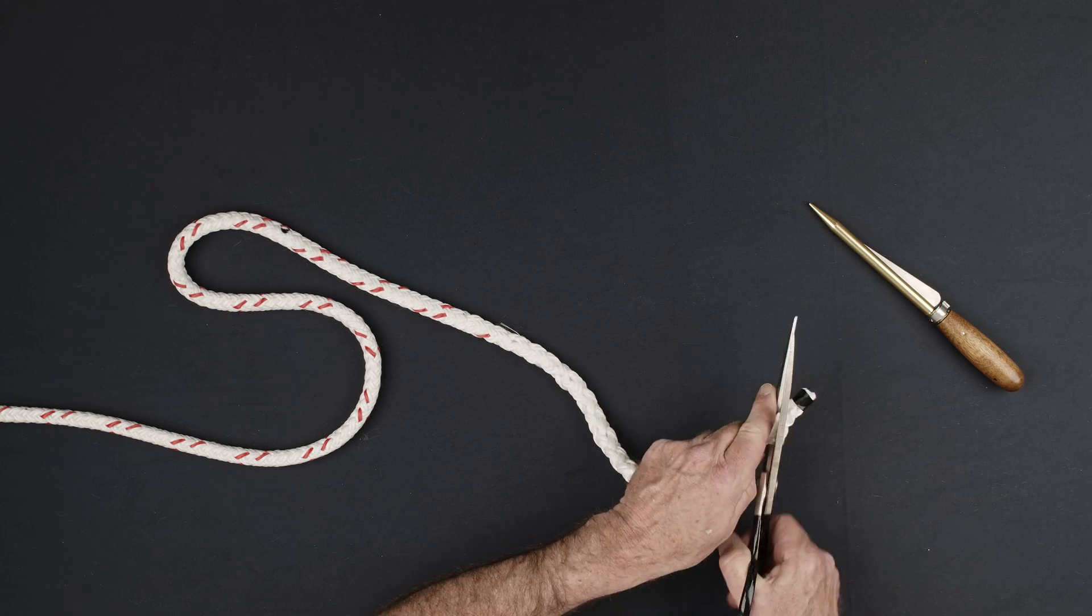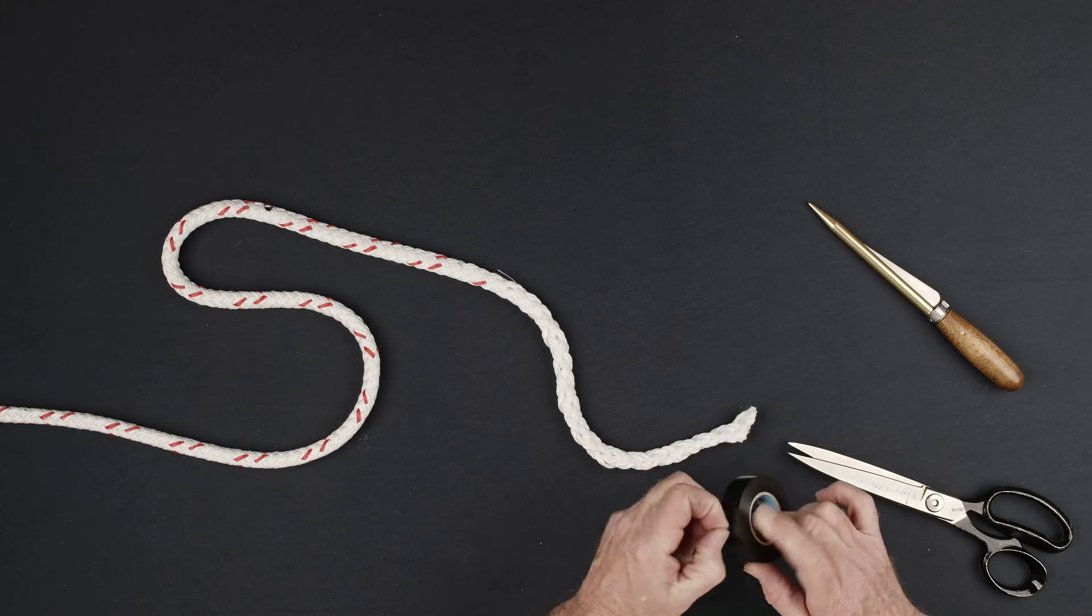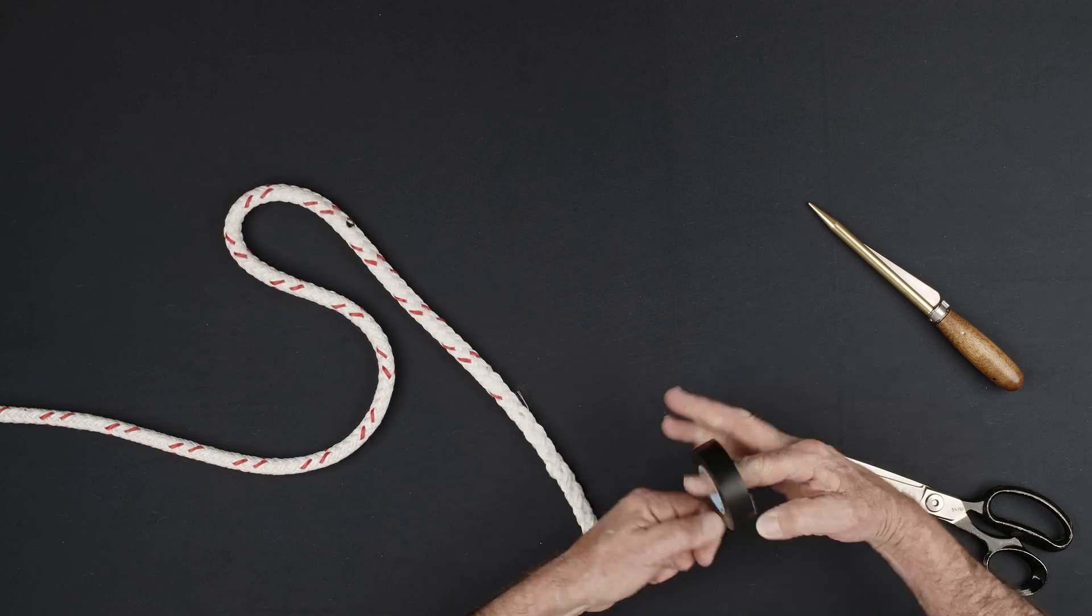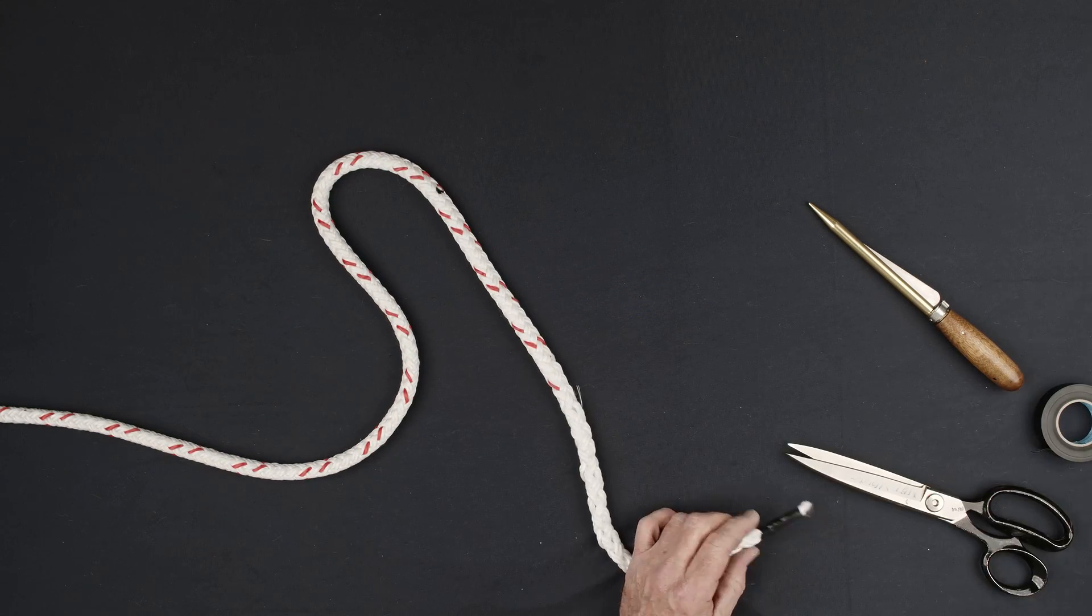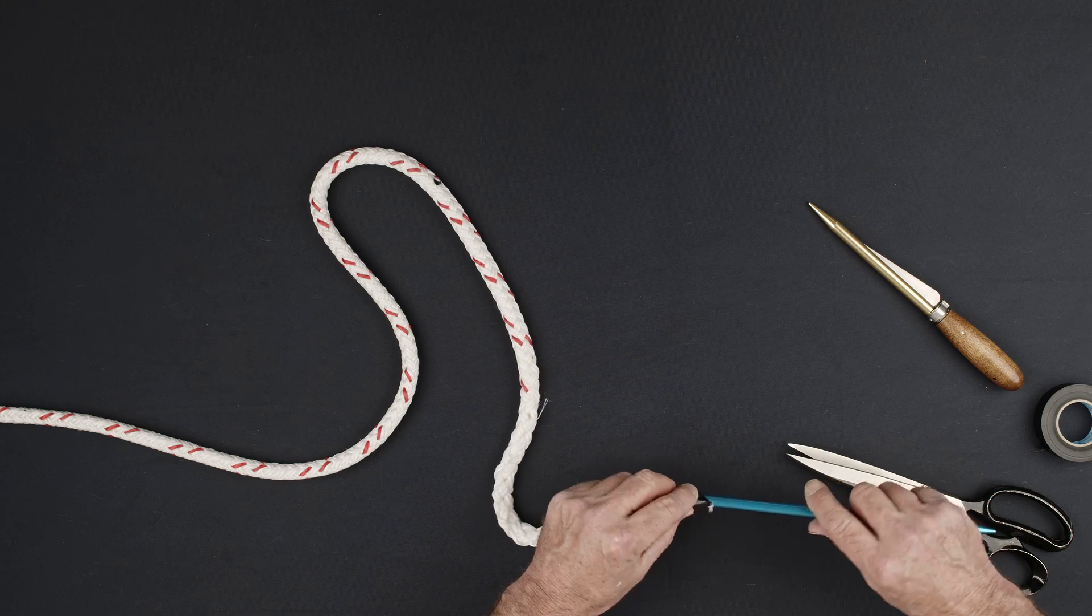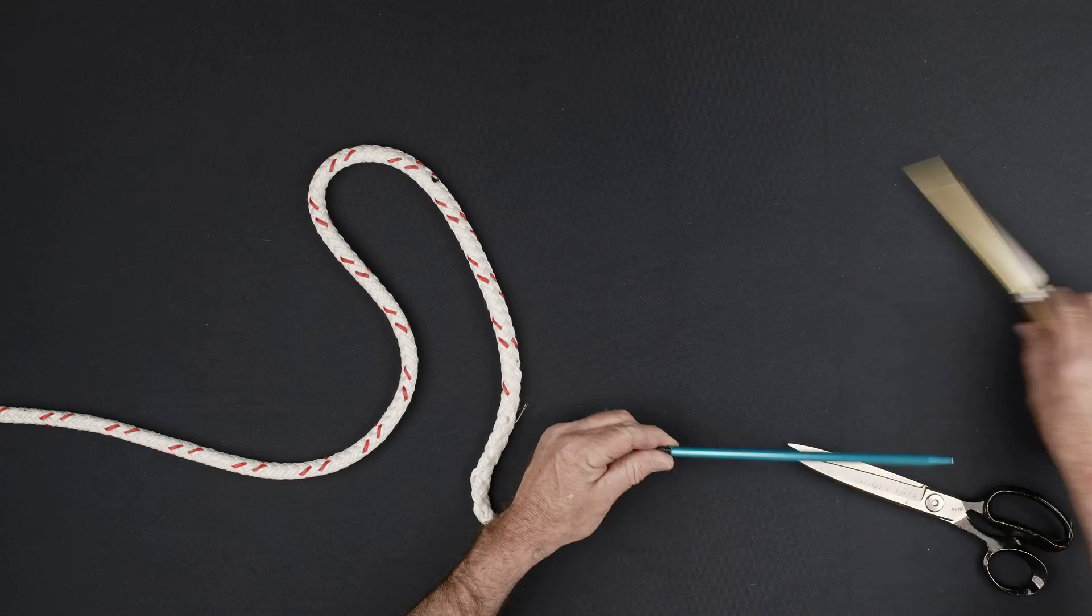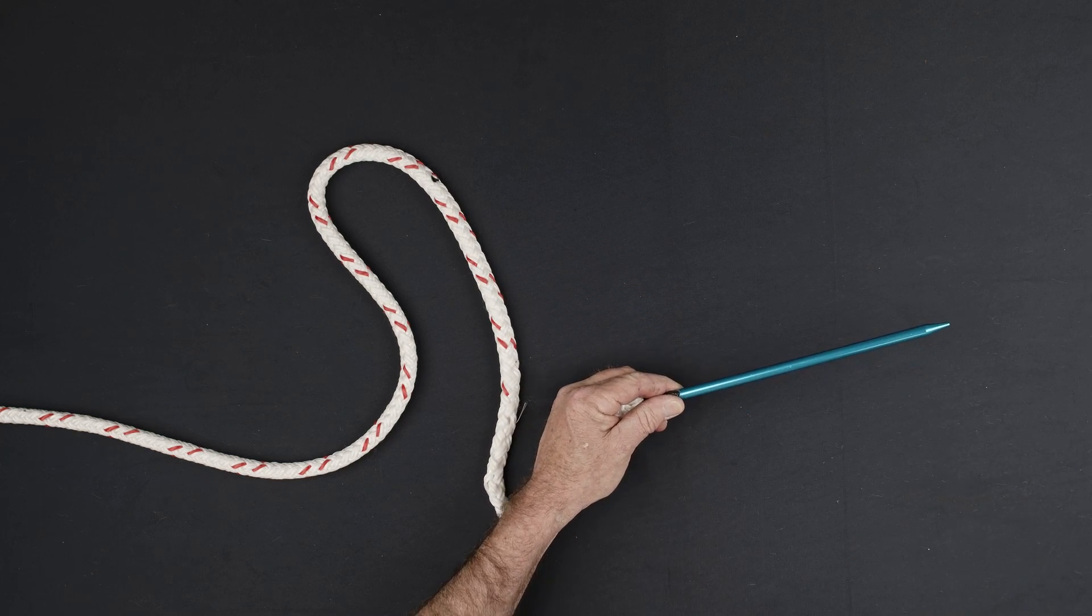Cut the end of your rope at a 45 degree angle and re-tape it tightly. Insert the tapered end of the rope into the hollow end of the fid and secure it with tape.